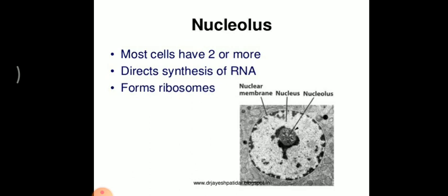rRNA makes up approximately 80% of the total RNA. mRNA is transcribed from DNA — it copies the genetic information from DNA. rRNA is responsible for ribosomal formation, and ribosomes are responsible for protein synthesis.